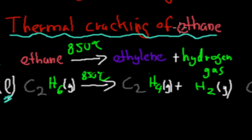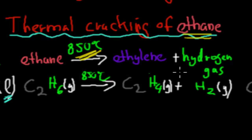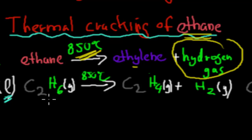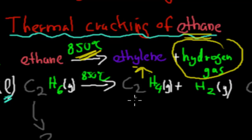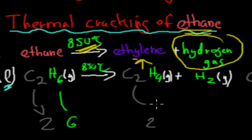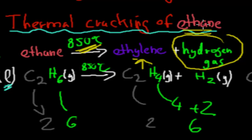Then we had the thermal cracking of ethane. This was an example used in the last video. Ethane is also a gas — the chemical formula is C2H6. In the presence of a lot of heat, we can break it down into ethylene and hydrogen gas. That's the whole chemical formula: C2H6 in the presence of 850 degrees Celsius makes C2H4 (ethylene) and H2 (hydrogen gas). If we check if it's balanced: we have 2 carbons on each side, and 6 hydrogens on the left and 4 plus 2 on the right — that's 6, so it's balanced.